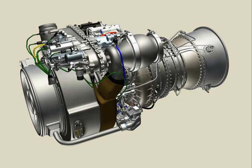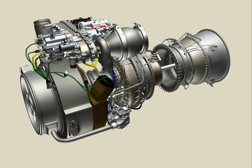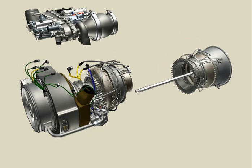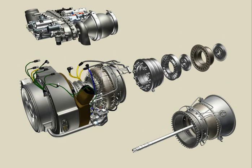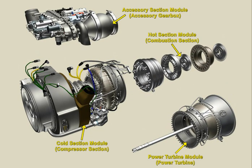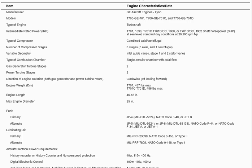Under the modular maintenance concept, the turboshaft engine is divided into four modules: cold, hot, power turbine, and accessory. The engine can be disassembled into these four modules, and there are no special tools required to disassemble and assemble the engine at Aviation Maintenance (AVM) levels of maintenance.